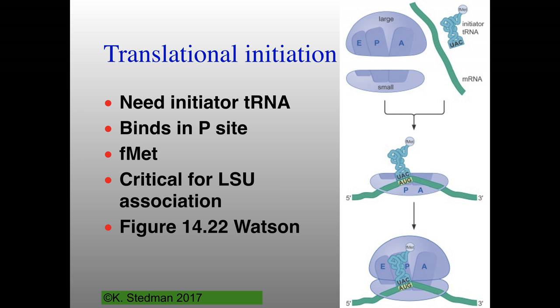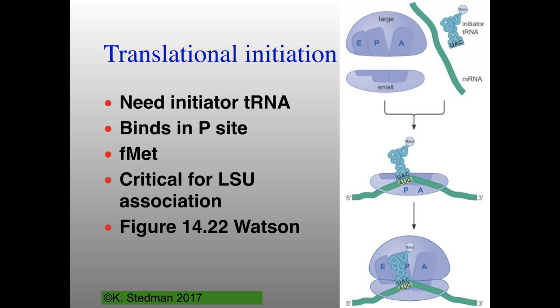For translational initiation in bacteria, you need an initiator tRNA which binds in the P site and incorporates a formylated methionine, which is a chemically modified methionine residue. It's critical to have this binding complex between the small ribosomal subunit, the mRNA, and the initiator tRNA, which then allows the large ribosomal subunit to associate with it. In both eukaryotes and prokaryotes, the initiator tRNA is in the P site at first.